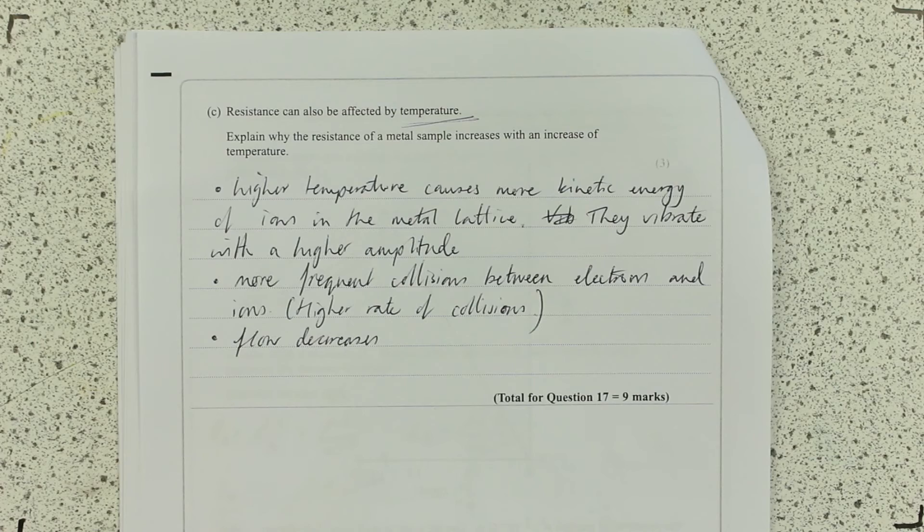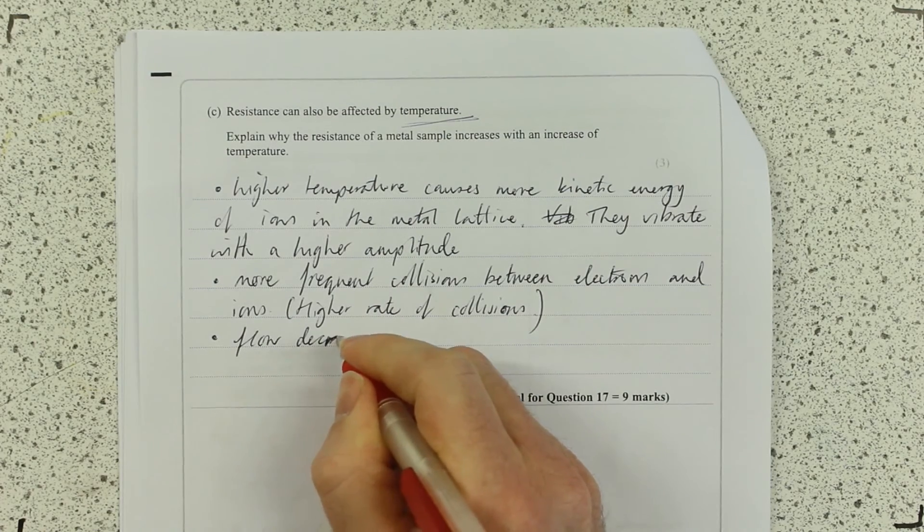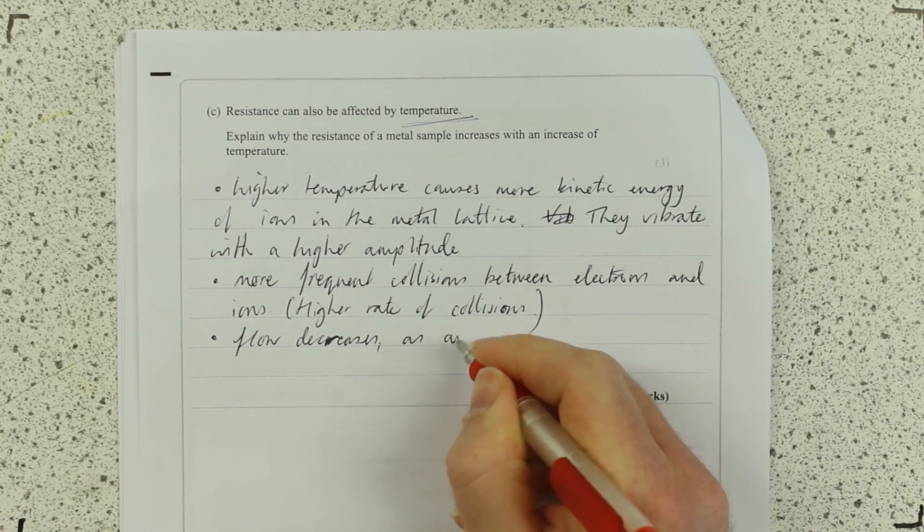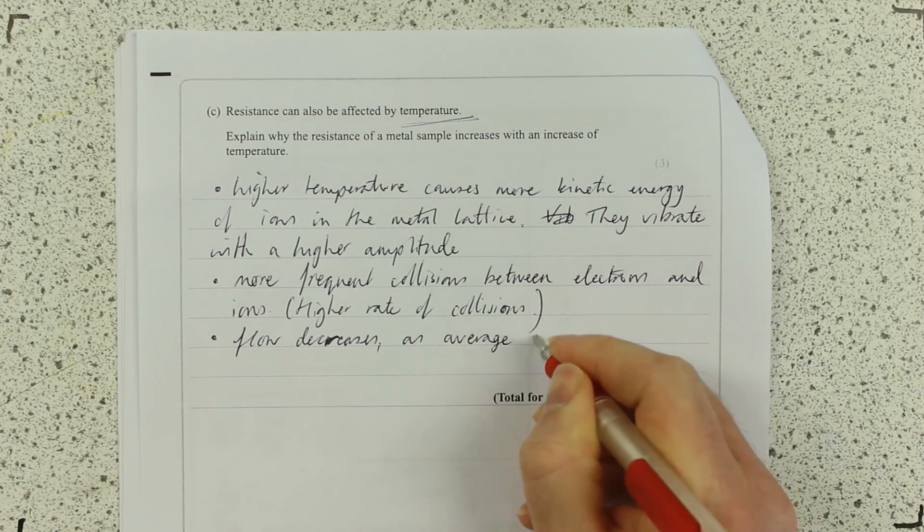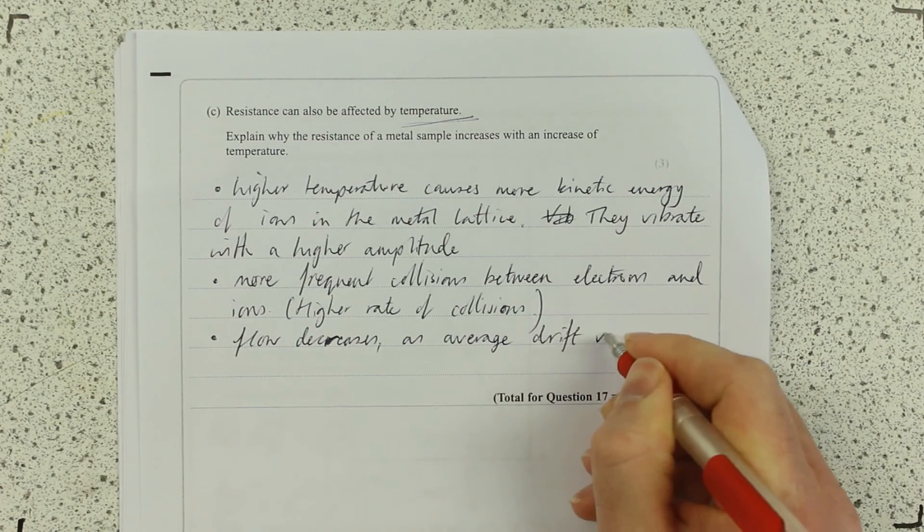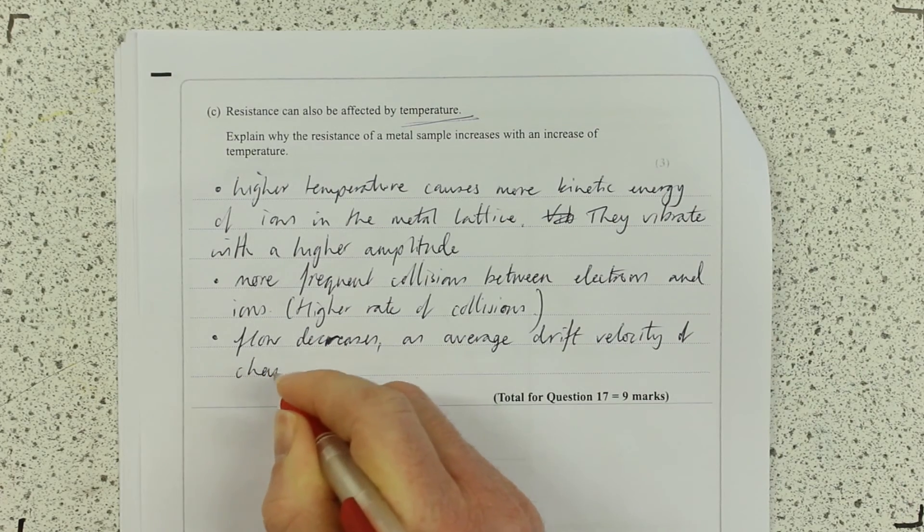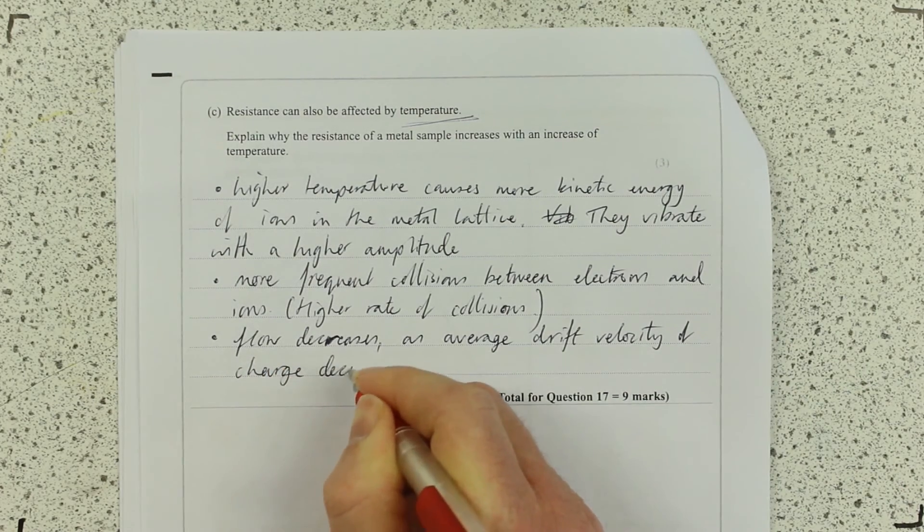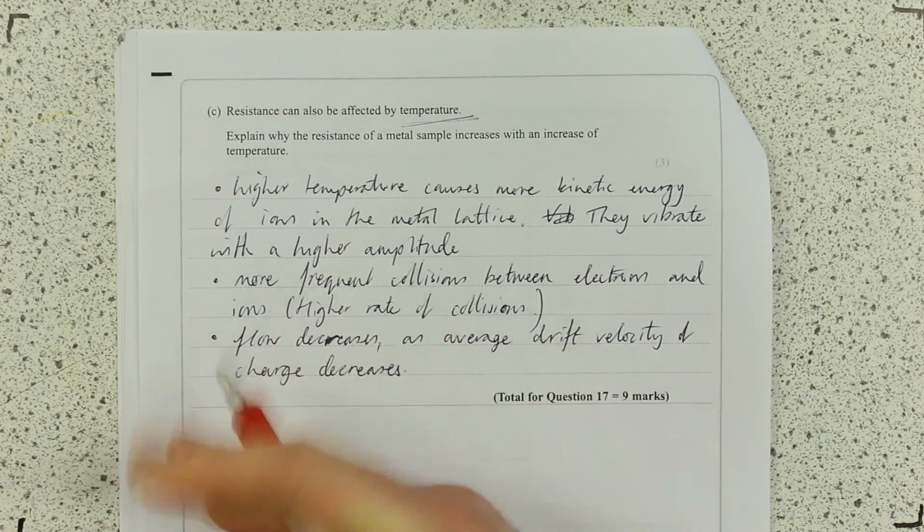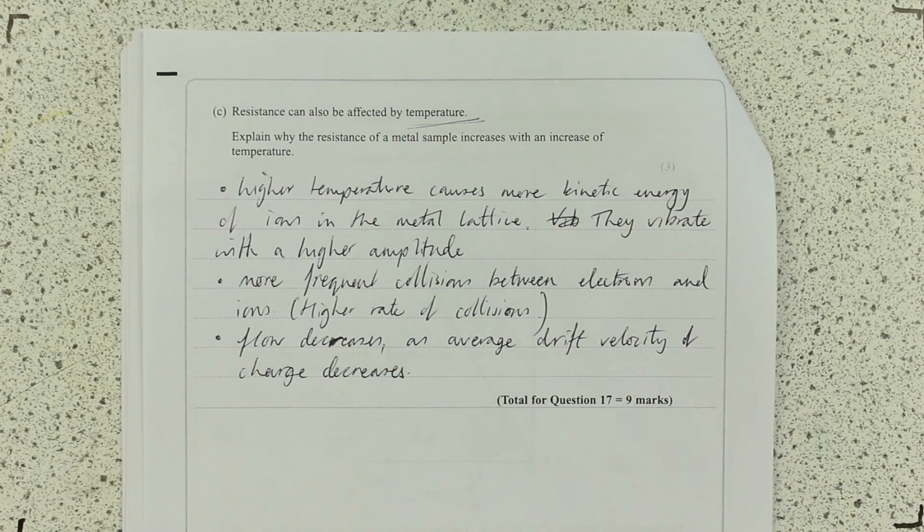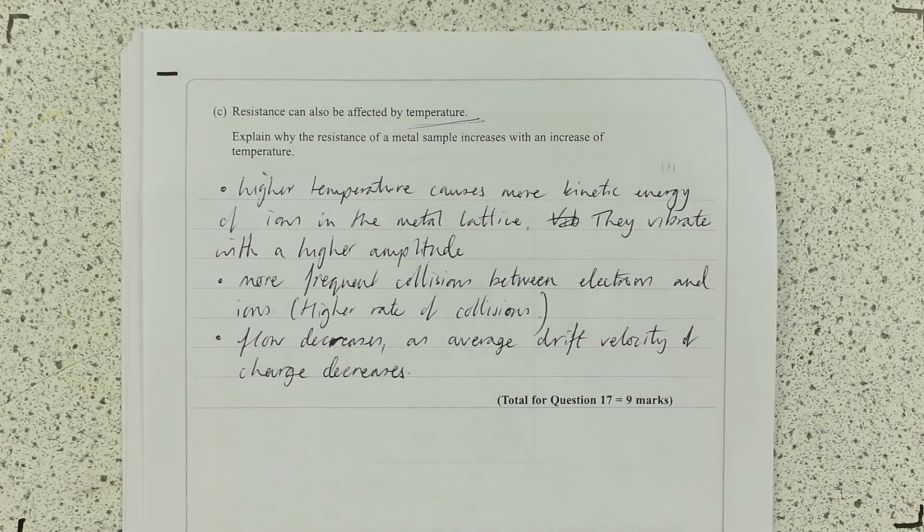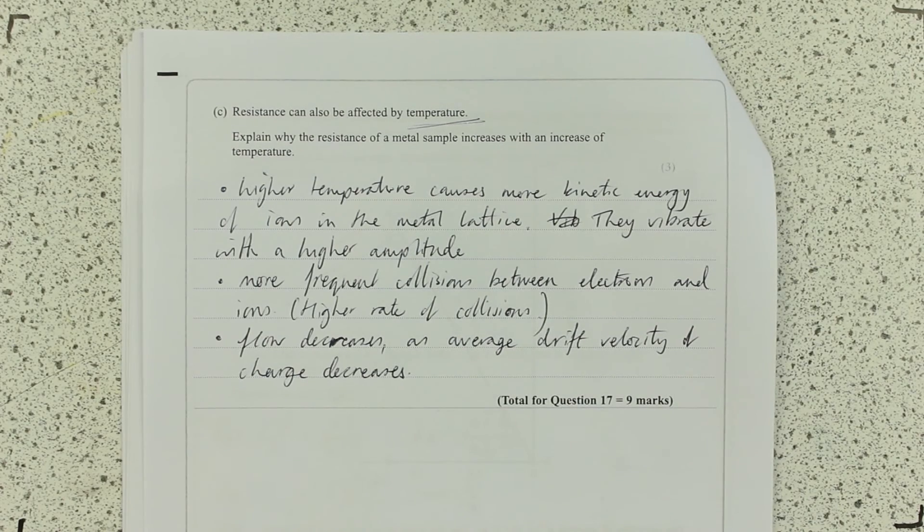So in other words, the flow decreases. You could talk about as average drift velocity of charge decreases. So this one is really just your simple explanation from your GCSE that you're pretty used to. And I'm sure you managed that way back when. But you've just got to update the language a little bit more.